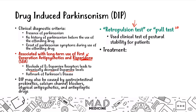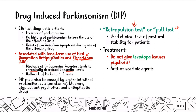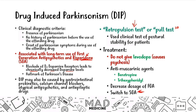When treating drug-induced parkinsonism, do not give levodopa. Normally you'd give levodopa for low dopamine in Parkinson's, but in DIP the decreased dopamine is not due to insufficient production — it's due to negative feedback from increased D1 upregulation and cyclic AMP. Giving levodopa would actually worsen psychosis. Instead, use anti-muscarinic agents like benztropine or trihexyphenidyl, lower the first-gen dose, or switch to a second-gen antipsychotic.